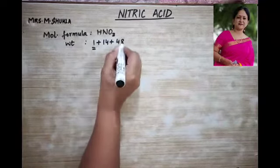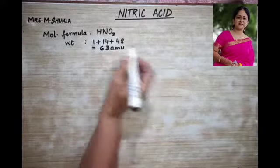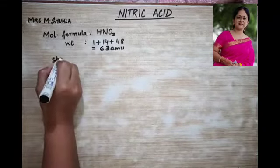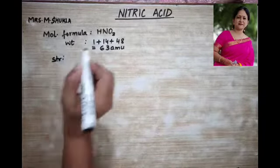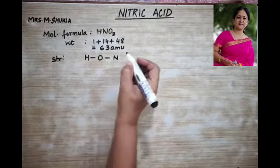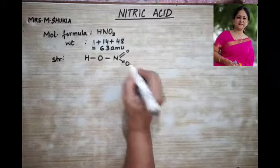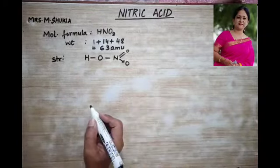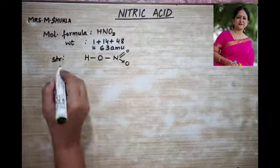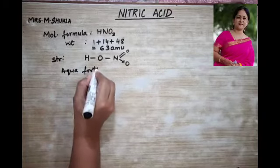The structure of HNO3 is written like this: H has one bond with oxygen, another bond with nitrogen, a double bond to oxygen, and an arrow bond to another oxygen. This is the structure of HNO3. Nitric acid is also called aqua fortis.